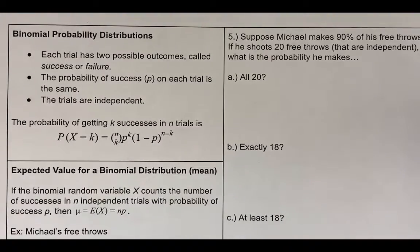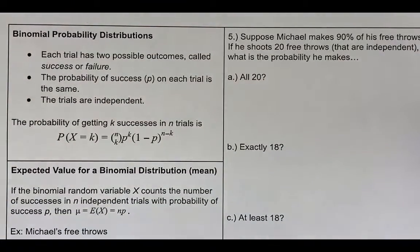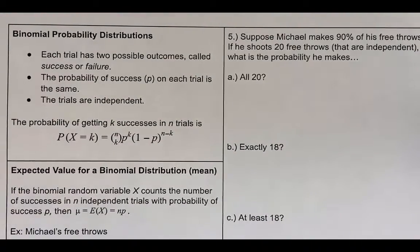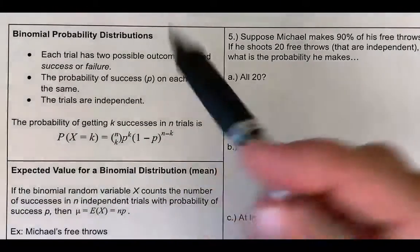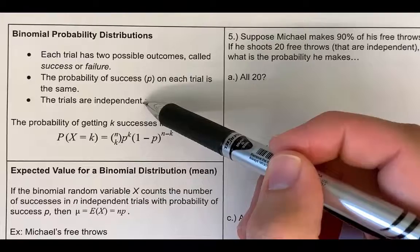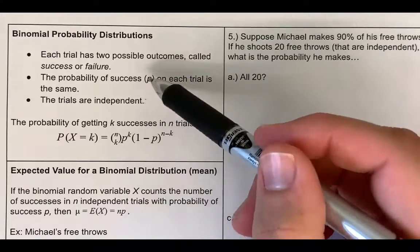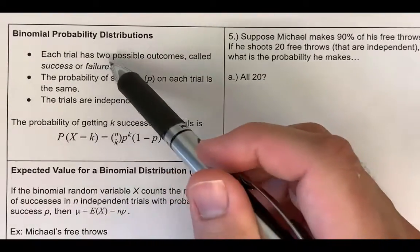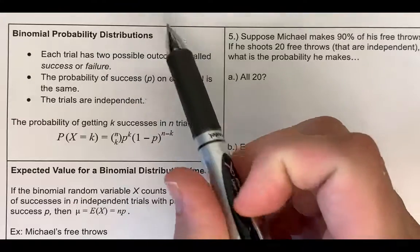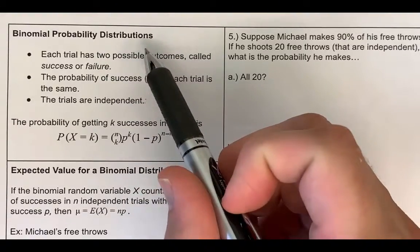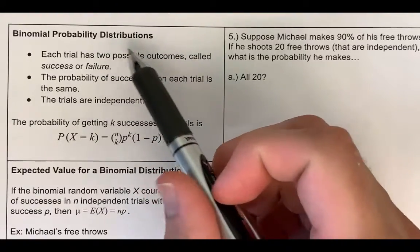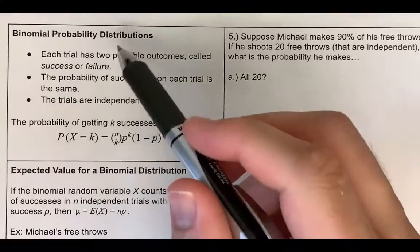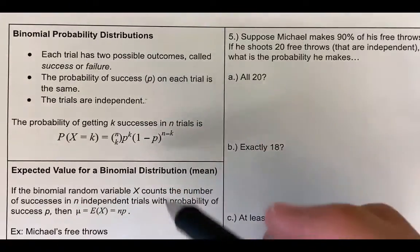Binomial probability distributions. These are probability distributions for a binomial experiment. If the following bullet points are true about a probability situation, then it is a binomial probability distribution — we can use a binomial probability distribution to model the situation.